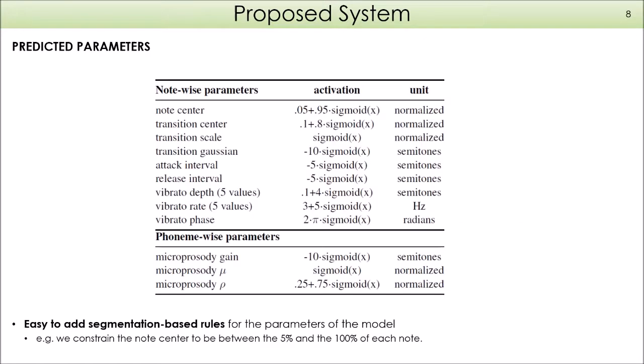In this table, we can see the list of parameters predicted by the network, divided into note-wise and phoneme-wise parameters. Note-wise parameters contain the note center, transition parameters, attack-release, and vibrato parameters, while phoneme-wise parameters relate to microprosody. We can see the different activations and units used for each parameter. It's important to say that it's really easy to add segmentation-based rules. For example, with the note center activation, we constrain the note center to be between 5% and 100% of each note.